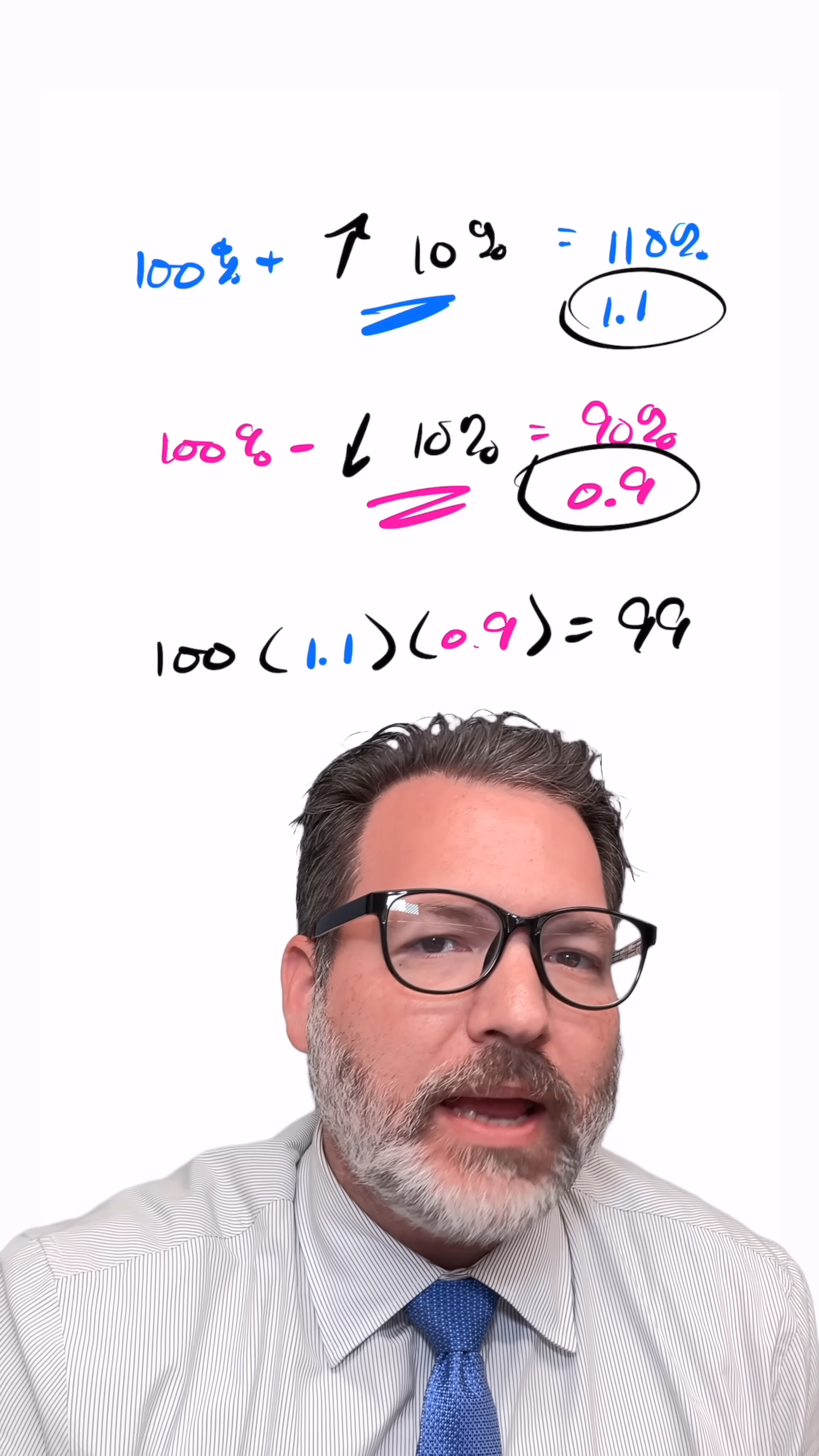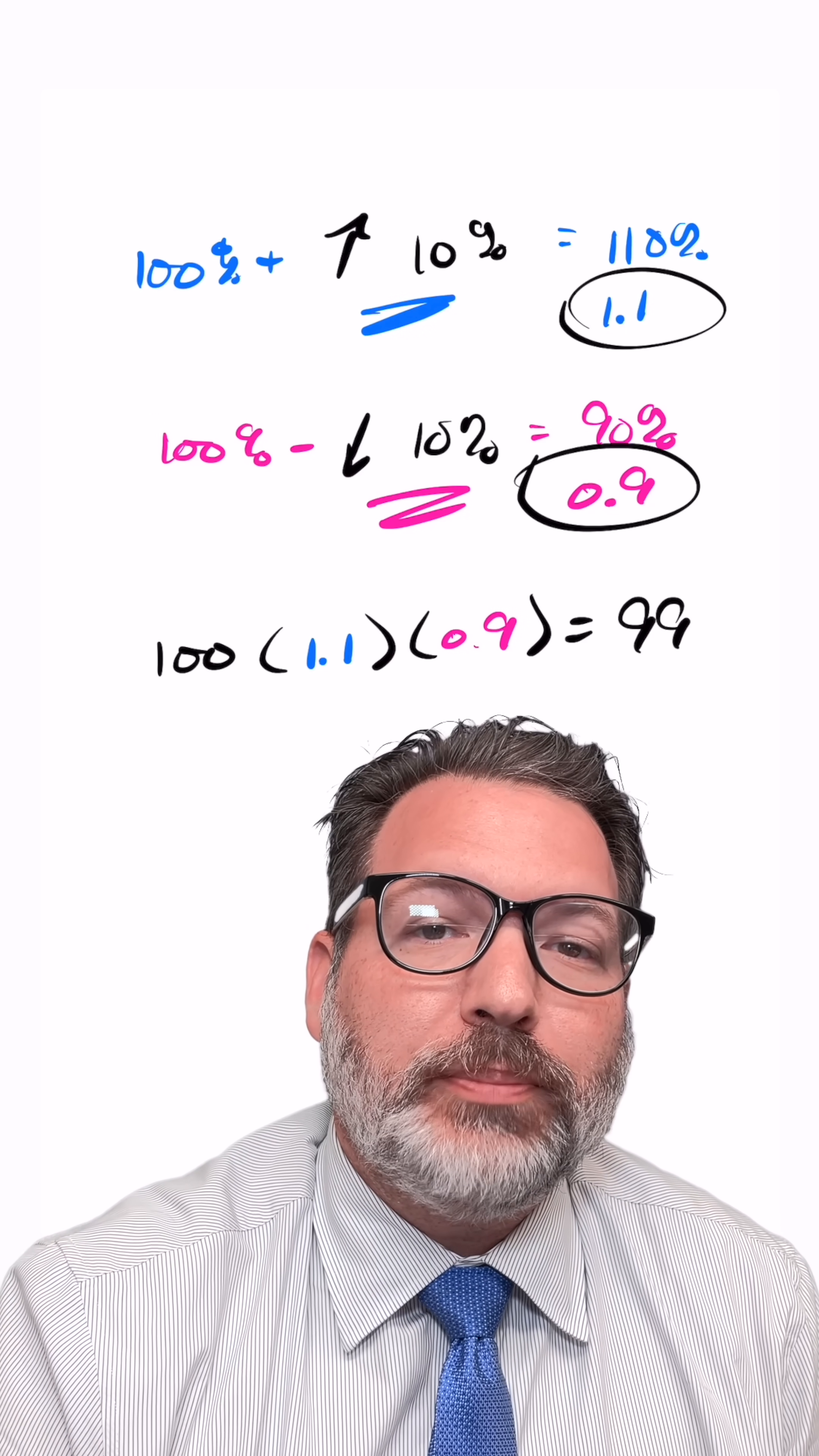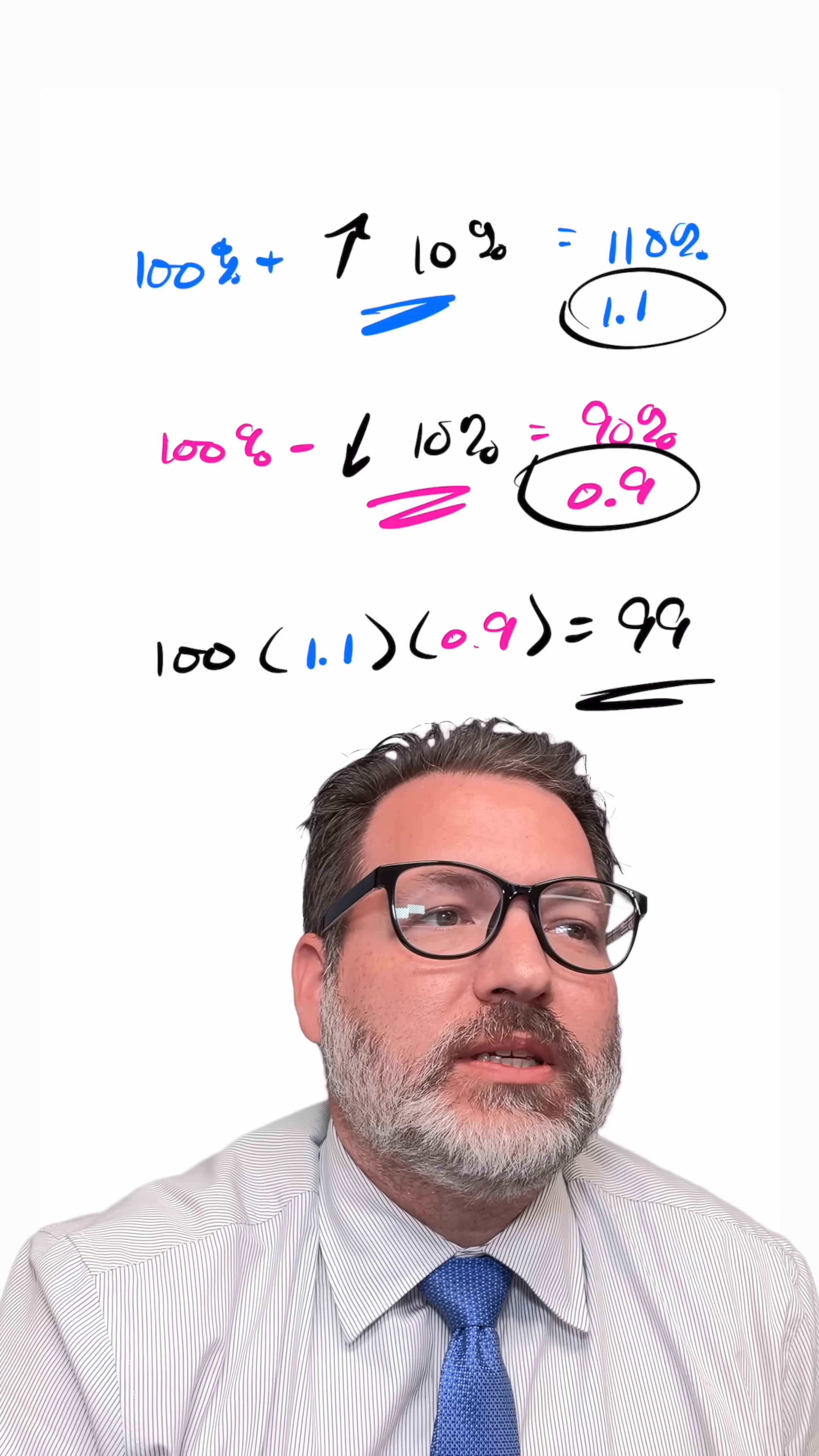This is not the biggest deal in the world—99% is not that far away from 100%—but with things that grow in this multiplicative way, with what we call exponential expressions, 99% of where you started is actually really bad, because it means every time you go through this cycle...